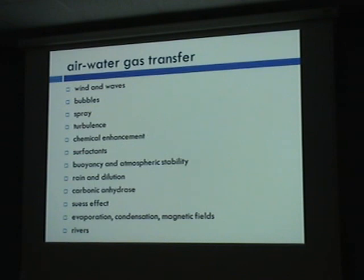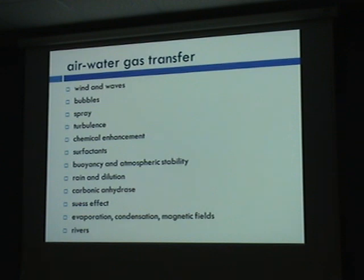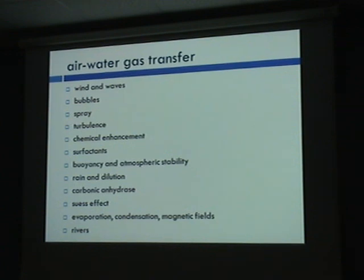Here's a laundry list of processes I've personally studied — almost every one on this list. Wind and waves: big driver, primary forcer. Bubbles: lots of energetics, additional surface area causes more mixing. Spray generated in the atmosphere. Turbulence from breaking waves, current fields, large-scale Langmuir motions, buoyancy caused by heat fluxes. Chemical enhancement is a very near-surface chemical exchange. Surfactants are a physical thing. Buoyancy and atmospheric stability — if you have a neutral system and start extracting heat, you'll generate mixing that modulates that boundary layer and affects gas exchange. Rain and dilution. Also carbonic anhydrase, Seuss effect, and rivers.